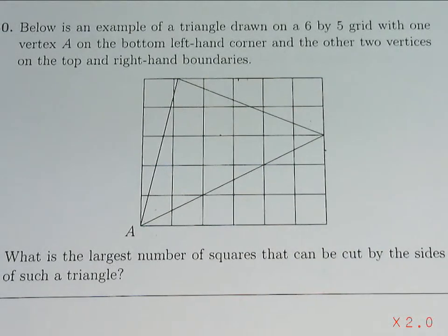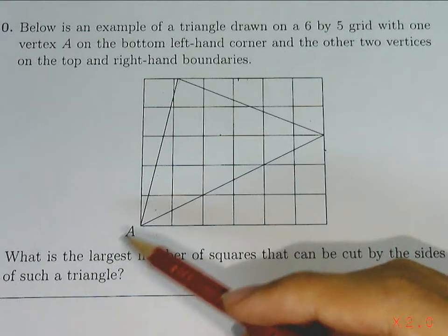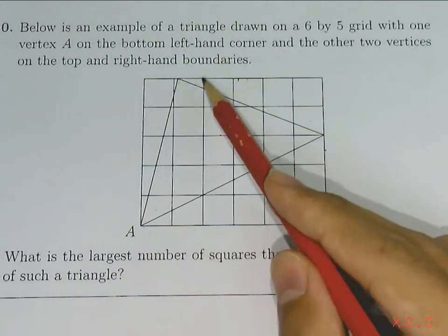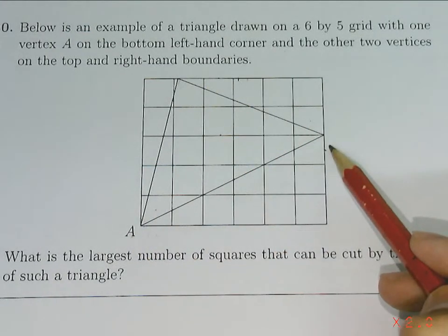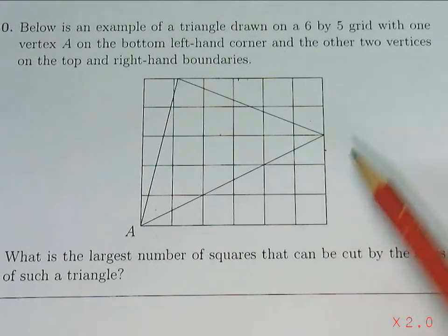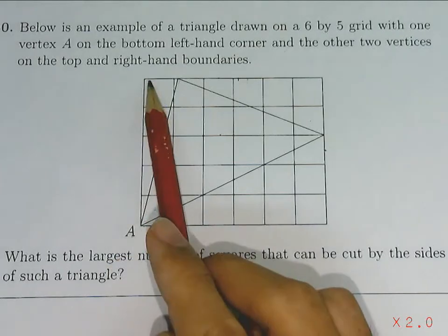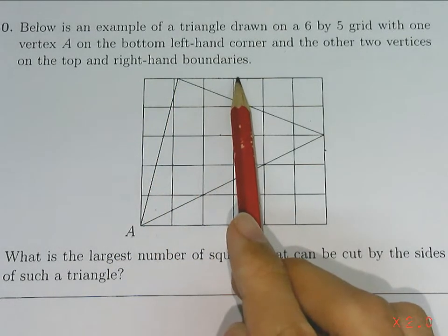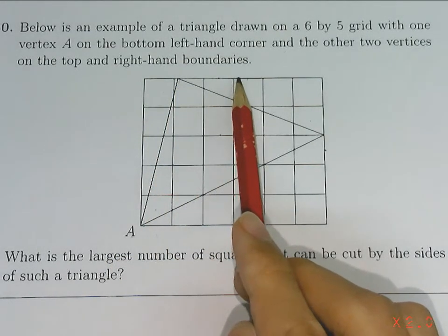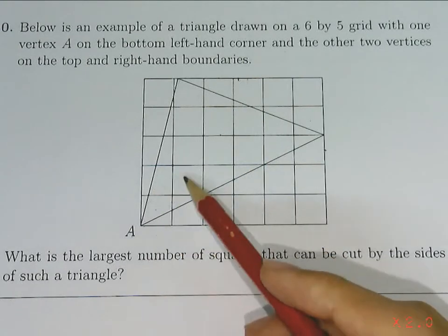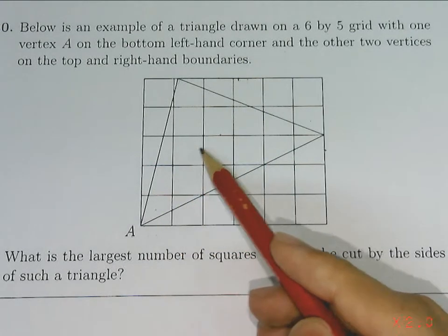So this is what the question is asking: how can we draw this triangle — with the vertex on A and the other two on the top and right-hand boundary — such that it cuts the largest number of squares? The concept here is that the more central the vertex is, the more squares it will cut, because the line will zigzag more.